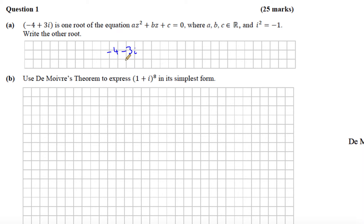You change the sign of the imaginary component to get the other root. Part B says: use De Moivre's Theorem to express 1 plus i to the power of 8 in its simplest form. This is a complex number given in Cartesian or rectangular form, and we want to use De Moivre's Theorem to express it in its simplest form.